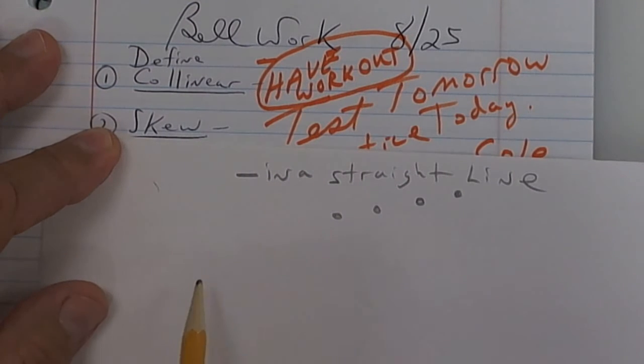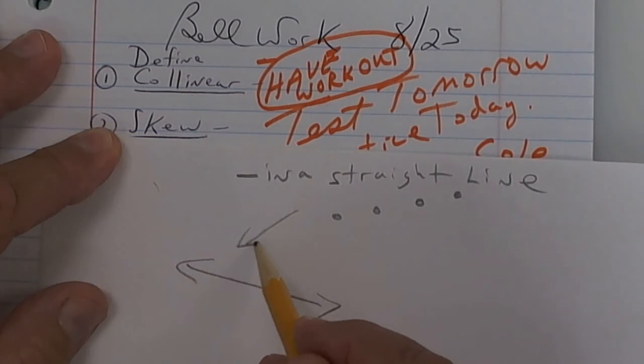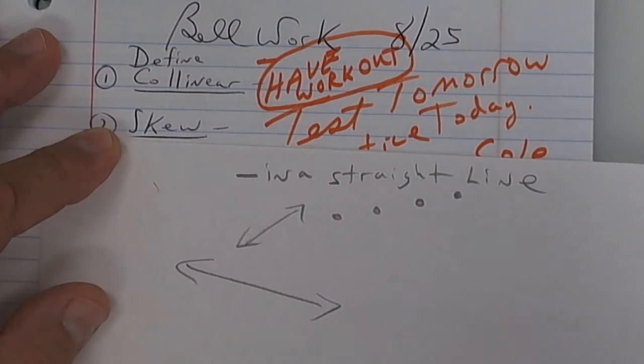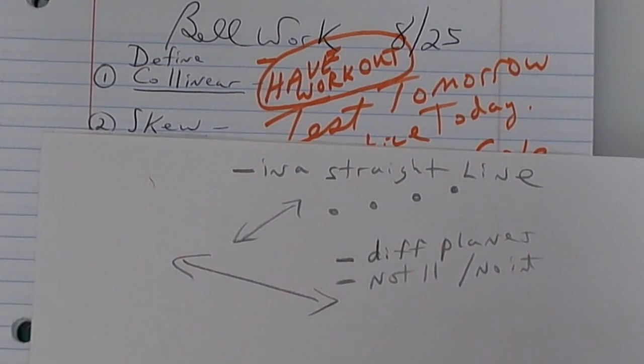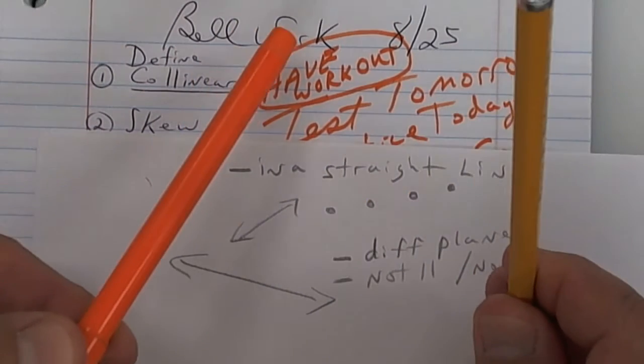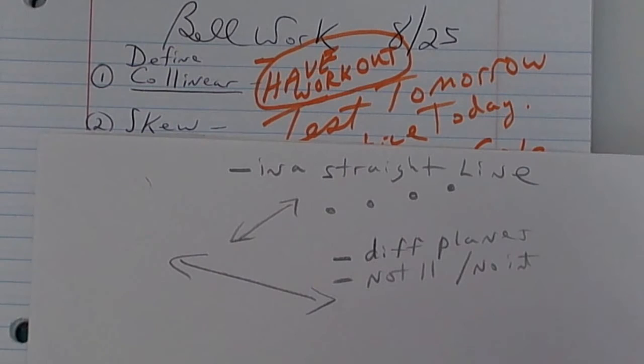Skew is two lines that are not parallel, but they do not intersect because they're on different planes. So different planes, do not intersect, not parallel, and no intersection. I think I had you take your pencils one day and twist them. They're not parallel and they do not intersect. They are called skew.